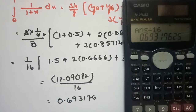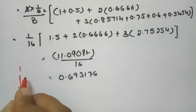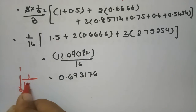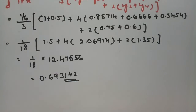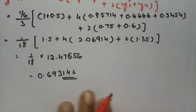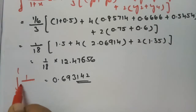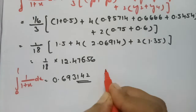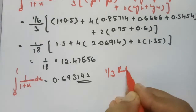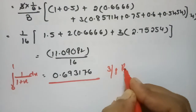So the value of the integral ∫₀¹ 1/(1+x) dx is 0.693142 according to Simpson's 1/3 rule, and 0.693176 according to Simpson's 3/8 rule.